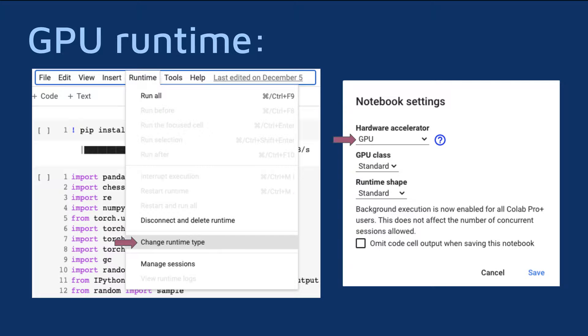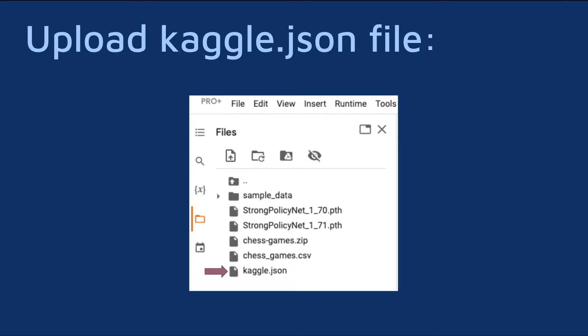To start, open a new Collab notebook and run a GPU runtime. This will ensure that your CNN can train and learn quickly. Next, you'll need to upload the kaggle.json file that you can get from this video description. This will allow you to easily download datasets from Kaggle directly into your notebook. Now, let's get the chess games dataset using the following code snippet. This dataset contains all of the chess games that our CNN will use to learn how to play.